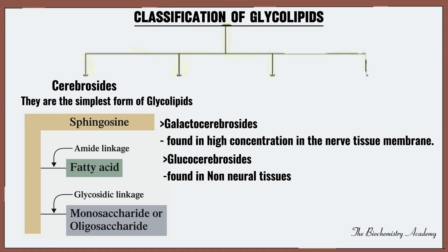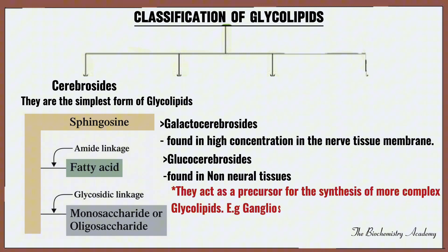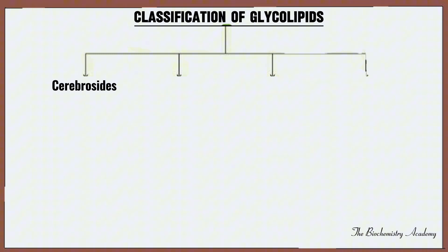One of the functions of cerebrosides is that they act as a precursor for the synthesis of more complex glycolipids — for example, the gangliosides, which are another classification of glycolipids. The second classification of glycolipids are the sulfatides.